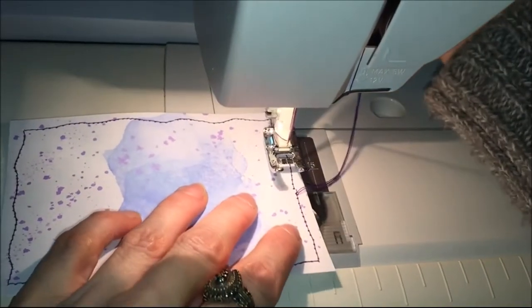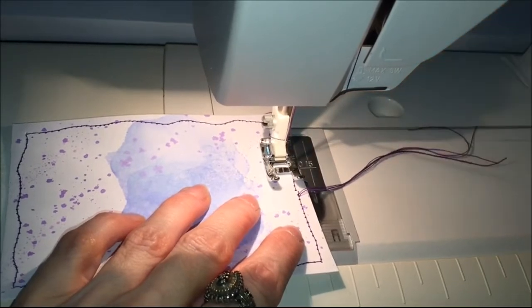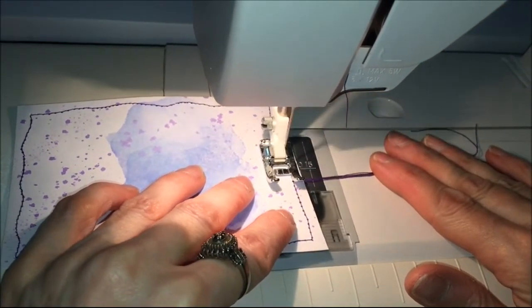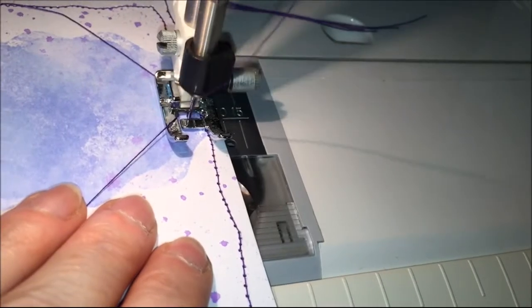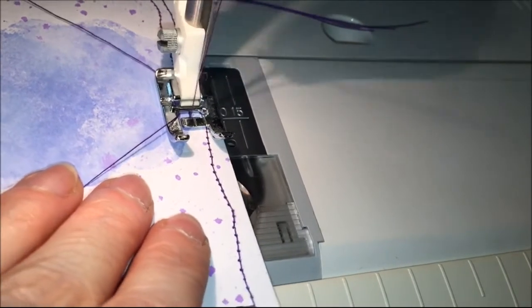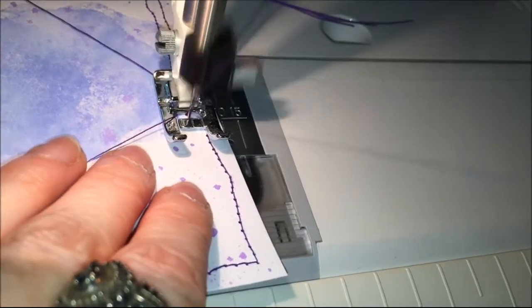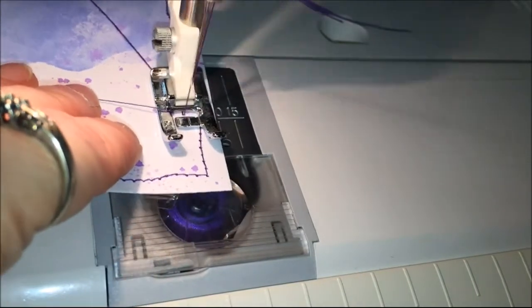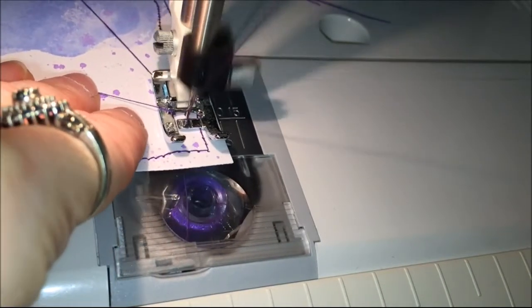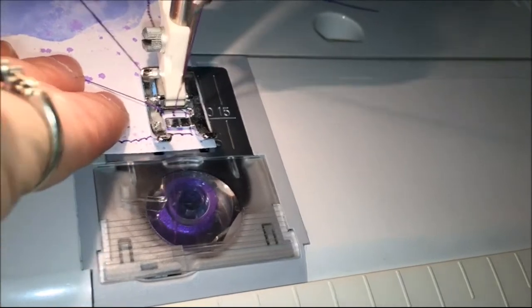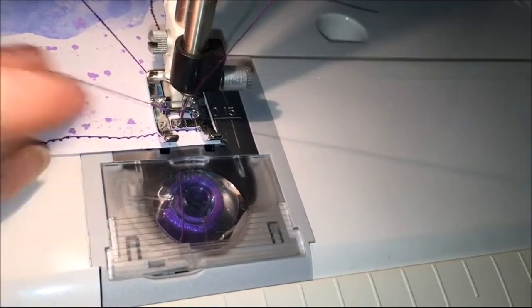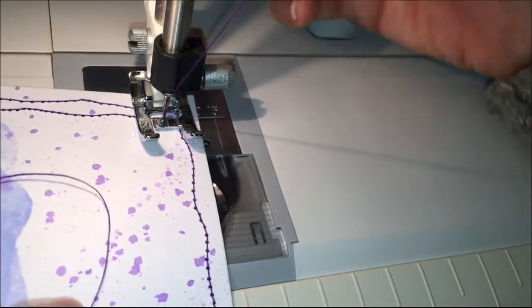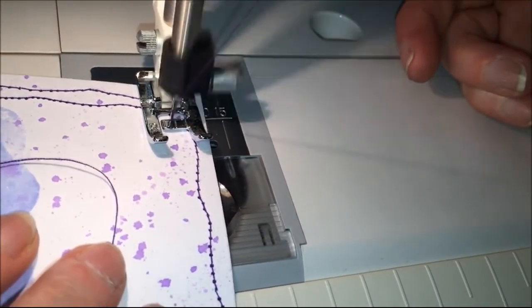Now I'm going to sew a second row on the inside of that first row. I'm not stitching too close to the first row but not too far away either. And there's kind of a close up. Again, I'm just letting the feed dogs do their work, and I'm guiding it with my fingers so it gets nice and crooked. I don't want that stitching to be nice and straight, I want it to be nice and crooked. I'm pivoting at the corners so I can get some nice corners so they're not too round.